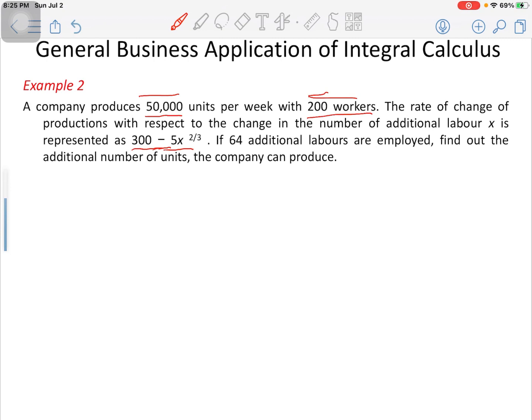Let's look at something here. The company is producing 50,000 units every week and they are doing so with 200 workers. They also made us understand that the rate of change of production, for instance if our production is represented as P, then the rate of change of production is going to be dP/dx.